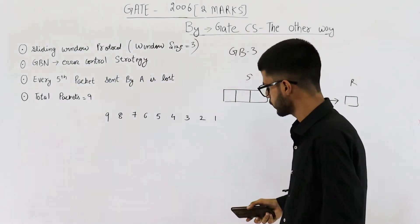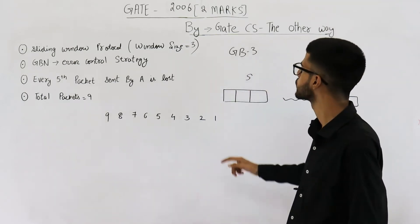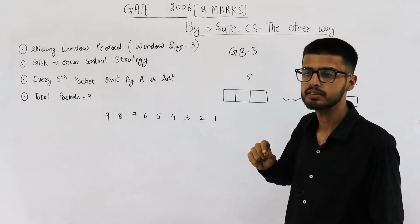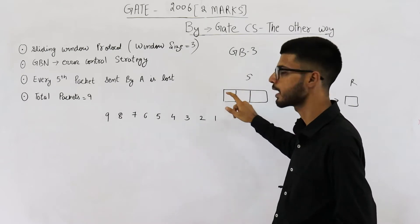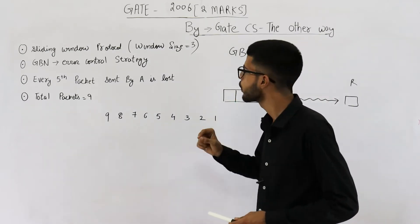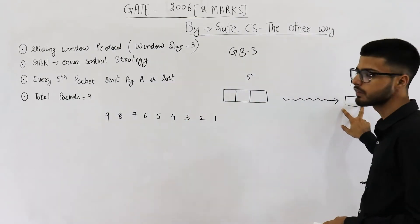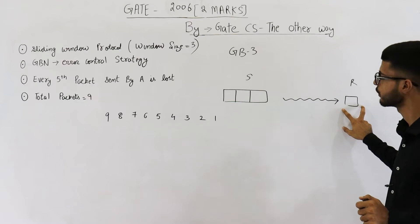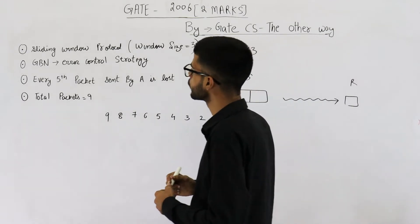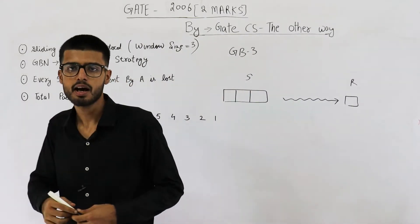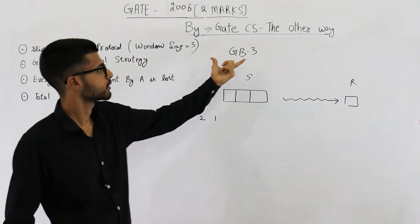Go-Back-N is used here, and the value of N is 3 because the sender window size is equal to 3. We have three packets that can be saved in the window at the sender side. In Go-Back-N, whatever is the value of N, the receiver is always going to have a window size of 1, meaning it is waiting for packets in order. Total packets that we need to send are 9.